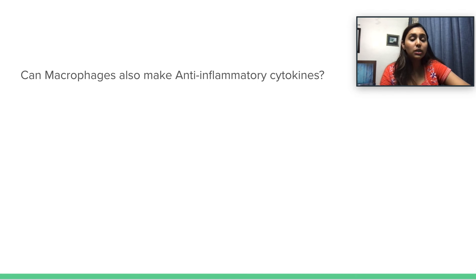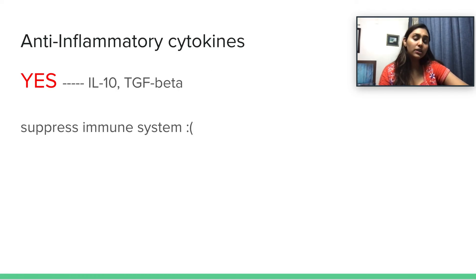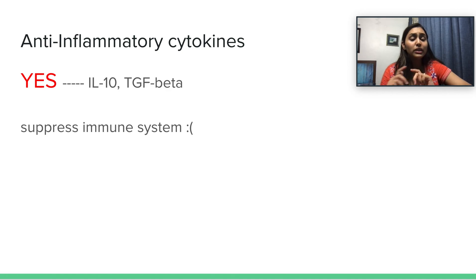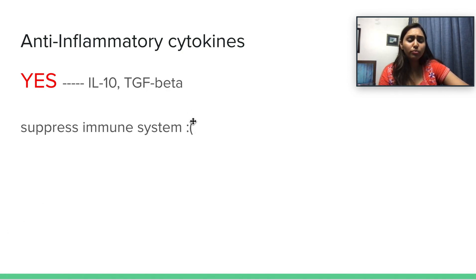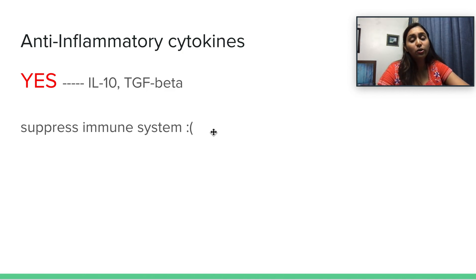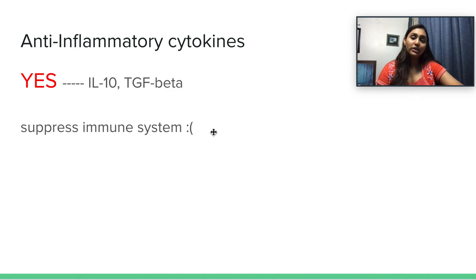Macrophages can also help make anti-inflammatory cytokines. IL-10 and TGF-beta are anti-inflammatory cytokines that help suppress the immune system — they are both good and bad depending on the situation. And that's everything for this video. I'll see you again in the video for adaptive immunity. Hope this helps — thank you!